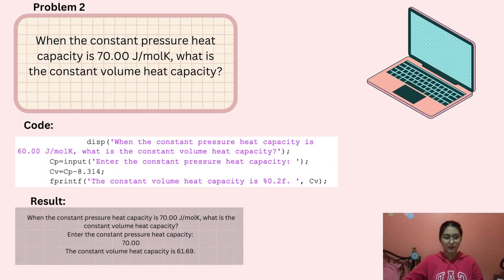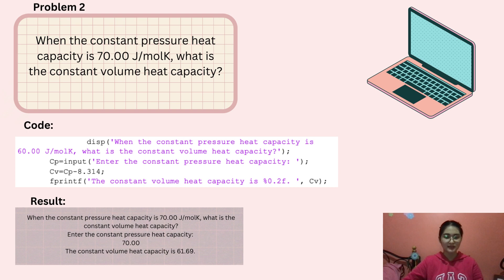For the second problem: when the constant pressure heat capacity is 70 J per mole K, what is the constant volume heat capacity? After you input the code, you enter the constant pressure heat capacity, which is 70. The constant volume heat capacity is 61.69.